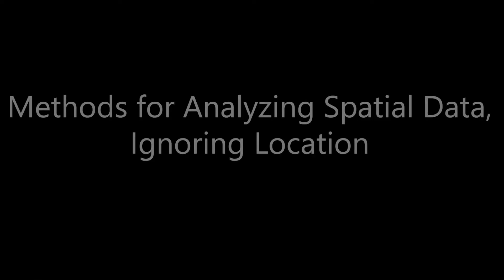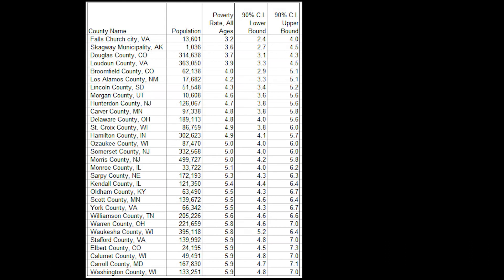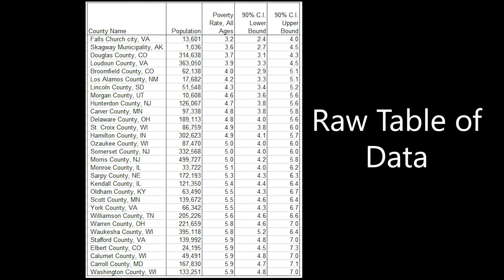It is also important to discuss methods used for analyzing spatial data that ignore location. You'd be surprised how often people don't actually consider geographic maps as a method for presenting quantitative data that has a location component. For example, this image shows a raw table of data that was the basis for making the poverty maps you saw previously. A raw table is good for showing specific information, but ultimately will fail to provide any meaningful overview of the data, especially patterns and trends like we saw on a geographic map.